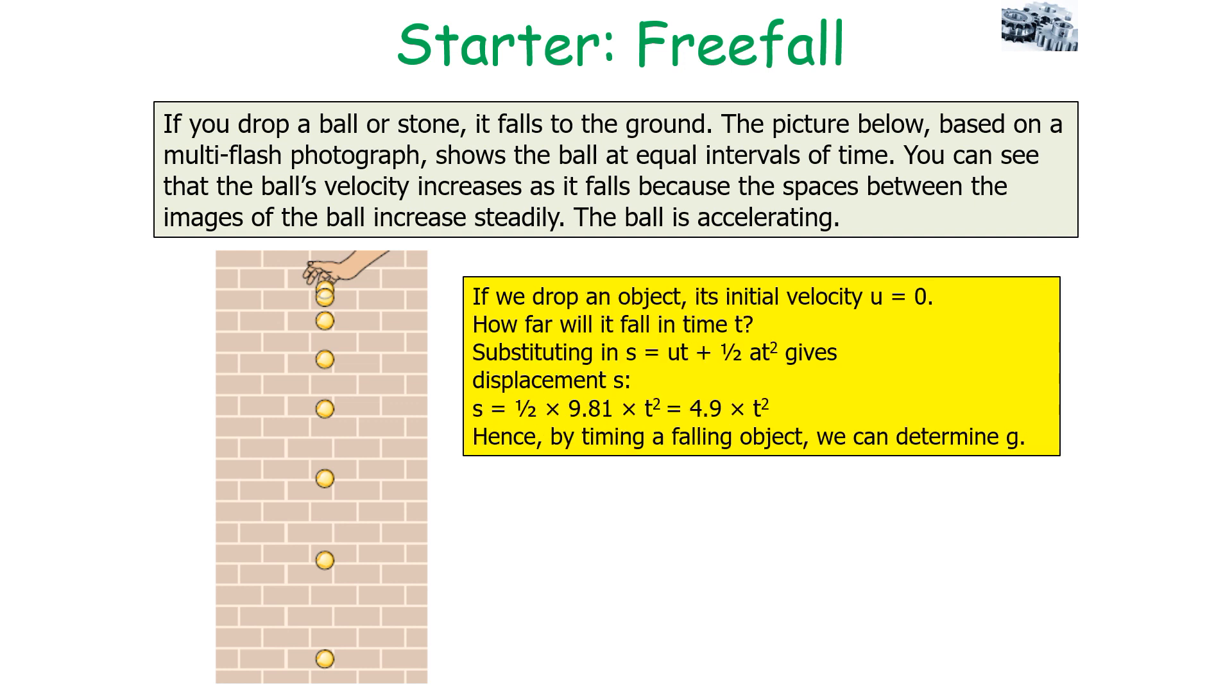We can actually link this into previous equations. If we drop an object, its initial velocity u equals zero. How far will it fall in time t? We can substitute in the equation s = ut + ½at², and we can therefore say s = ½ × 9.81 × t², or 4.9 × t².